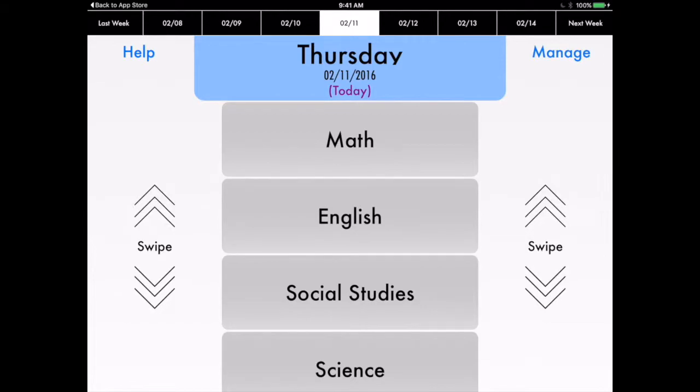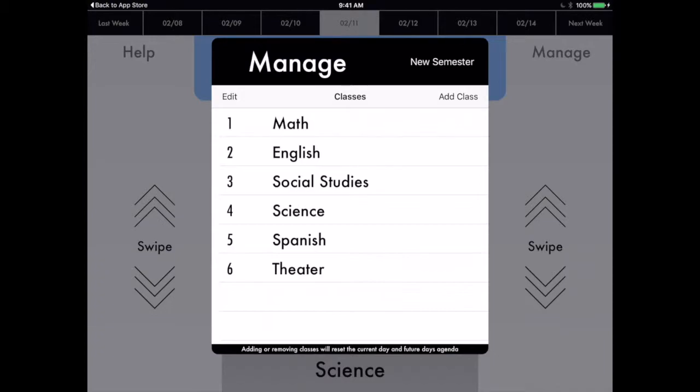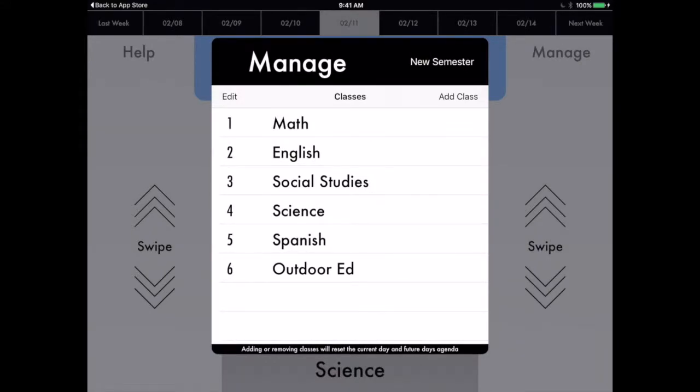I'm going to click on Manage, and you can see here I have some basic classes. Let's say that I'm not actually in theater, that I'm now in Outdoor Ed. I'm just going to click on Theater, the actual word, and I can delete it and then type in Outdoor Ed. Done, and there it is.